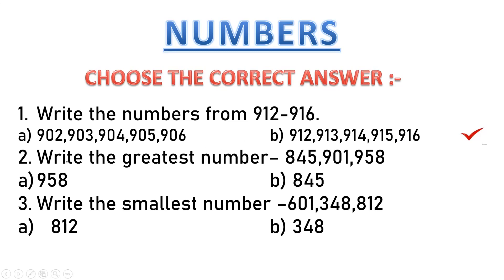Now write the greatest number. From here you have to select which is the greatest number. Always remember to start from the last digit. So 8 is 800 here. Here it is 900. And here it is also 900. This also 900. This also 900.